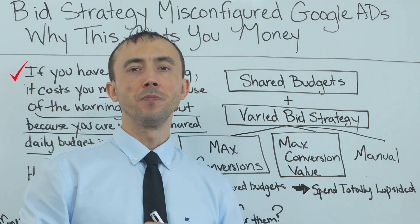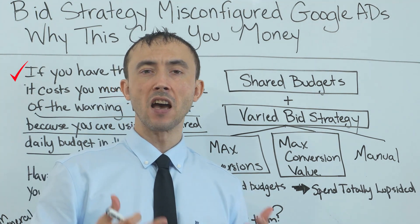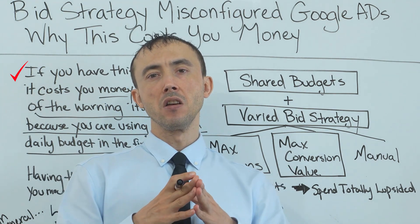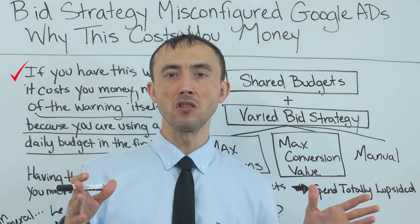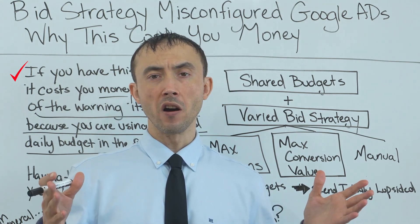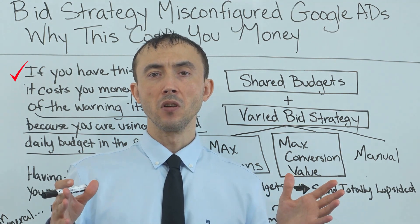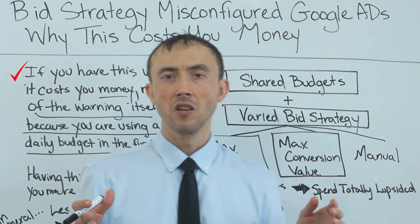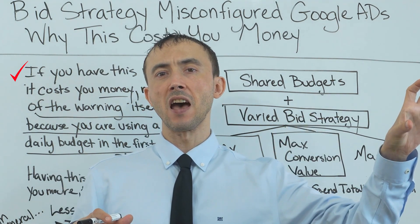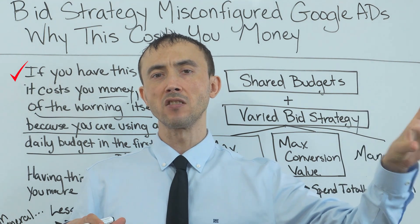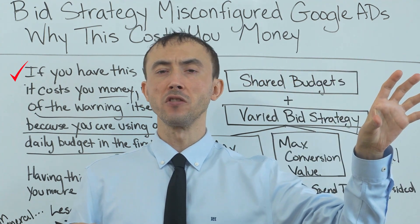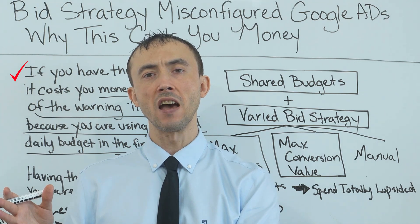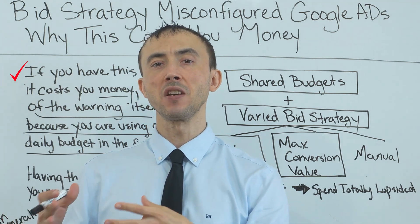I have talked and spoken against daily shared budgets in your Google Ads account on many different videos, primarily because the algorithm will actually pick favorites of certain campaigns to send the budget to. Unless you ran your campaigns for a really long time and had hundreds of conversions on all your campaigns within that shared budget set, the system is going to send most of the budget to campaigns with the lowest cost per conversion or highest ROAS, and not to the campaigns that don't have conversions. But a lot of times, campaigns without conversions simply haven't had enough clicks yet.